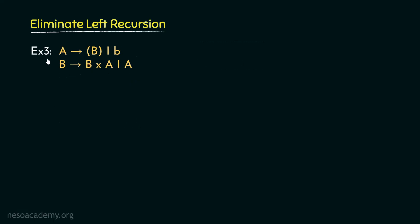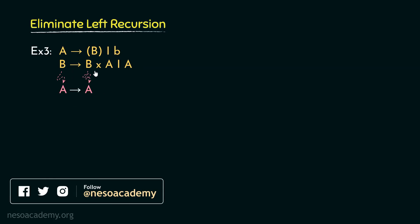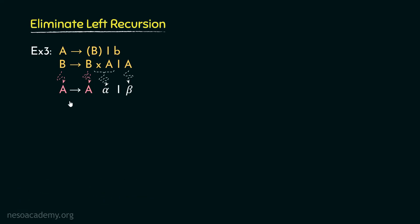Let's observe the third example. Observe this grammar: A can be rewritten as left parenthesis B right parenthesis or B. And B can be rewritten as B into A or A. There is no left recursion in the first production. However, in the second one, B can be treated as our generic non-terminal A, which is again appearing as the leftmost non-terminal on the right hand side. The remaining portion — into A — can be treated as alpha, and this A is clearly beta.